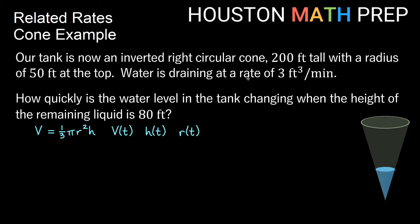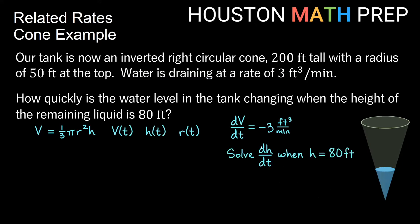Let's get any extra information from the problem. If water is draining at a rate of 3 cubic feet per minute, the volume is decreasing, so dV/dt is negative three cubic feet per minute. Our question asks how quickly the water level is changing, meaning we need to solve for the rate of change of the height, dh/dt, when h is equal to 80 feet.